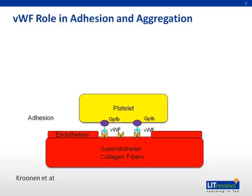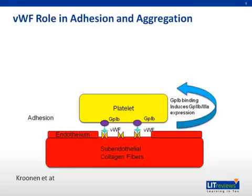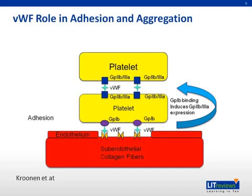This complex forms the initial adhesion of platelets to damaged endothelium. Once von Willebrand factor binds the glycoprotein 1B, it induces glycoprotein 2B3A expression on these platelets as well. Once this protein is expressed, further von Willebrand factor binds to it, thus allowing for binding of further platelets, leading to aggregation of platelets to the damaged endothelium.